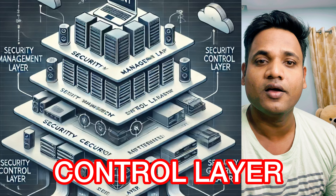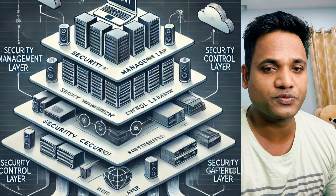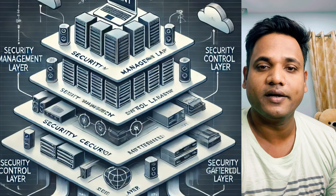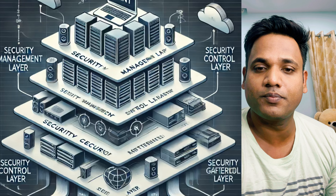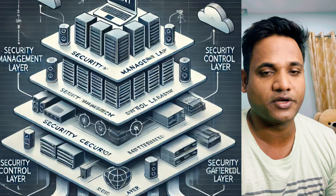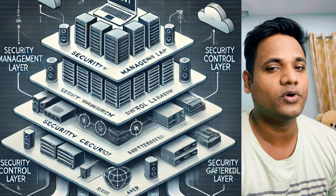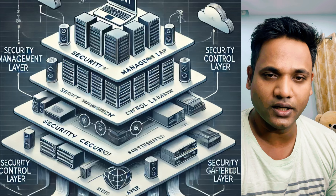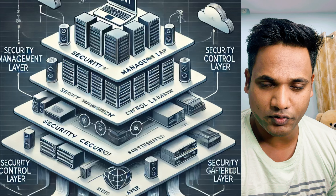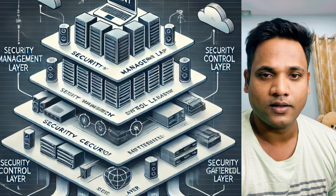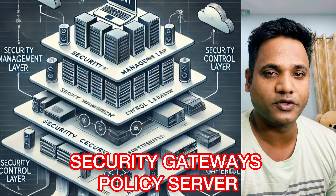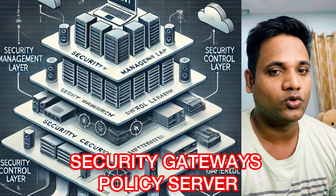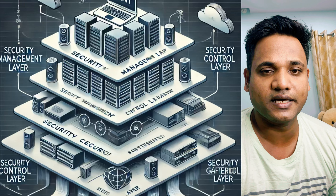The next layer is the Control Layer. The Control Layer acts as a bridge between the management and data layers. It handles the decision-making process for security policies. The main components required in the Control Layer include security gateways or policy servers.